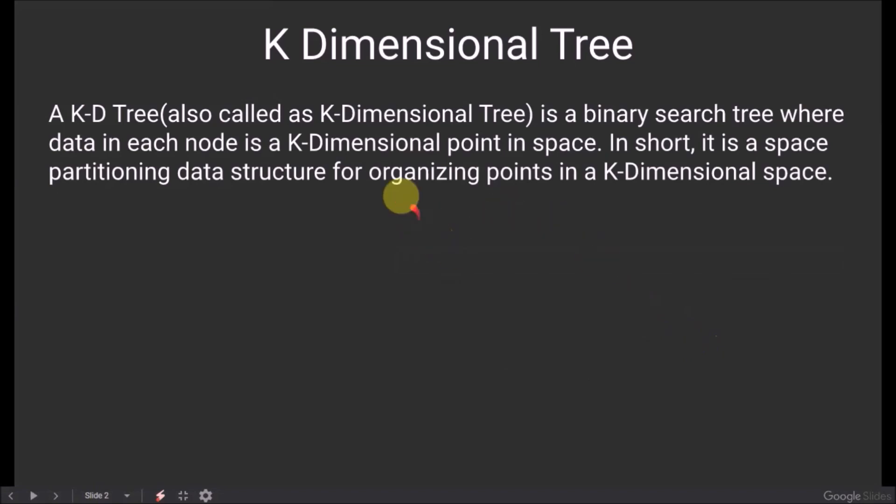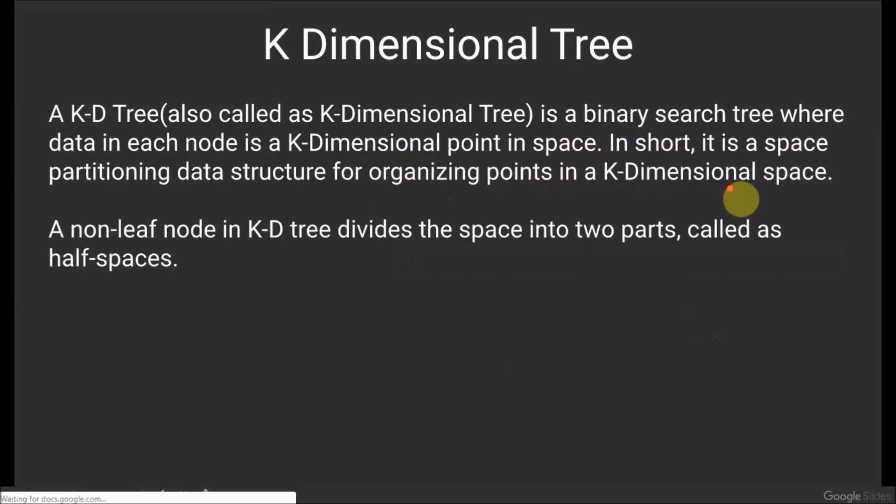A KD tree, also called as a k-dimensional tree, is a binary search tree where data in each node is a k-dimensional point in space. In short, it is a space partitioning data structure for organizing points in a k-dimensional space.